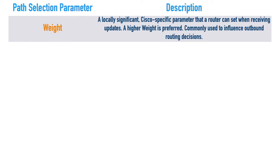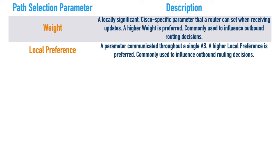What I use most for influencing outbound path selection decisions is local preference. Here we're not Cisco proprietary anymore, and we do communicate this value throughout our autonomous system. Just like weight, higher is better. We can use a route map to say: when I'm getting a route advertisement from this neighbor, I'll assign it a local preference value - higher for the preferred neighbor and lower for the backup neighbor.